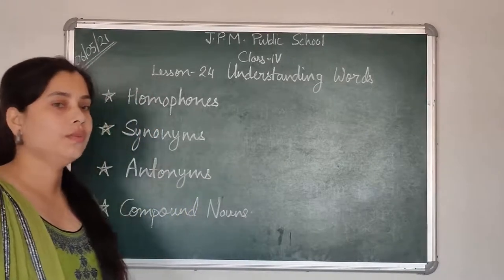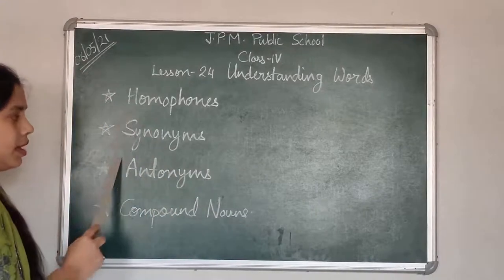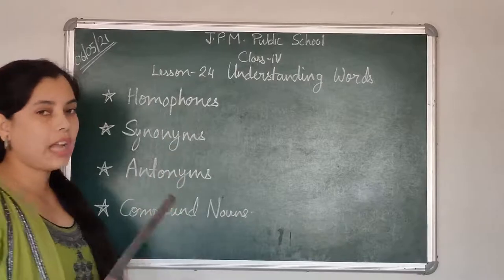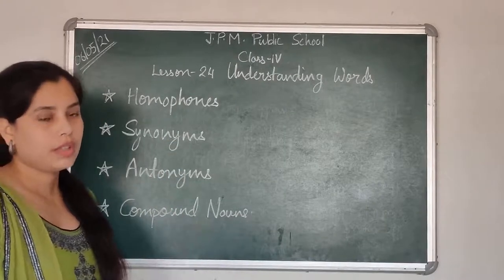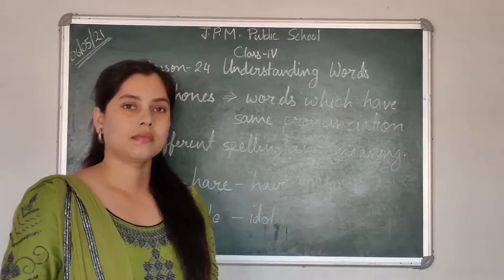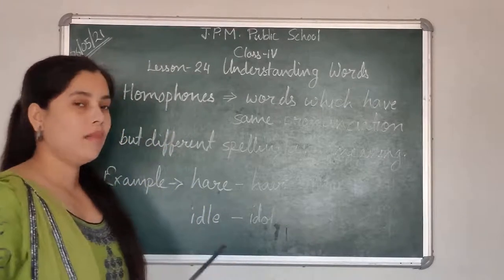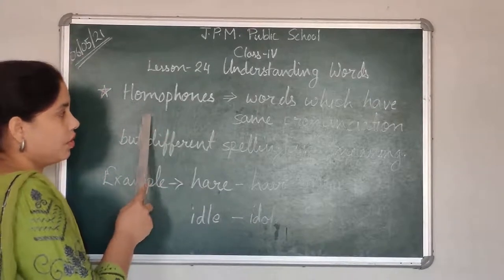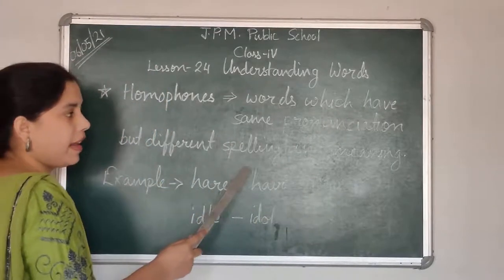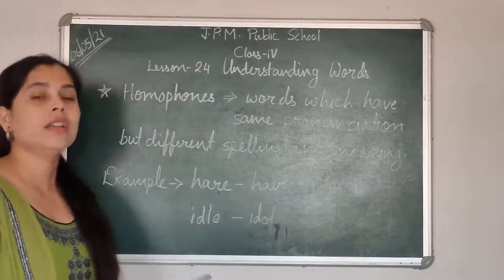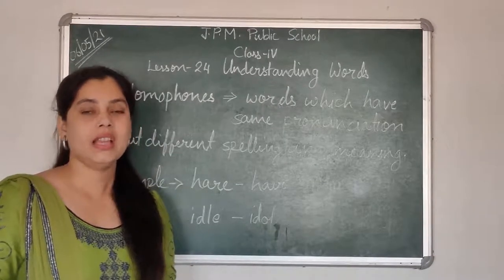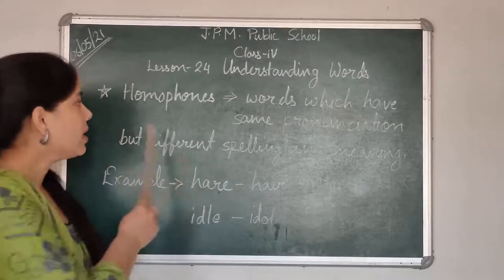Today we are going to do the explanation of homophones, synonyms, antonyms, and compound nouns. These four types are the types of words which we use while having a session with someone or the other. Today we are going to study about homophones first. What are homophones? Homophones are words which have the same pronunciation but different spelling and meaning. They are the words which sound alike but have different meanings and different spellings. Those words are known as homophones.